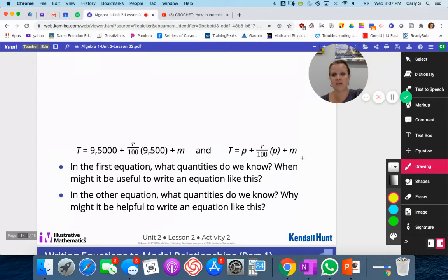If we're comparing a bunch of cars, the second equation is useful. In the first equation, what quantities do we know? We know the original car price and that's it. What might be useful with an equation like this? If we're comparing different tax rates, different taxes and miscellaneous fees.